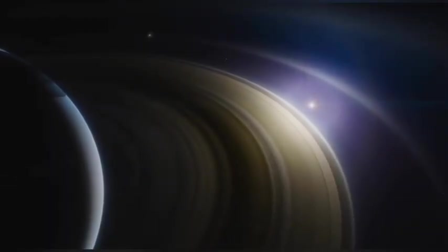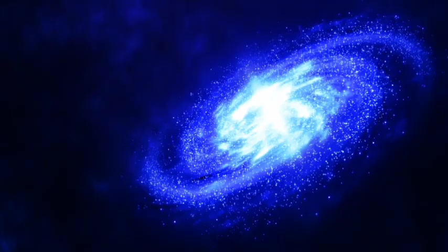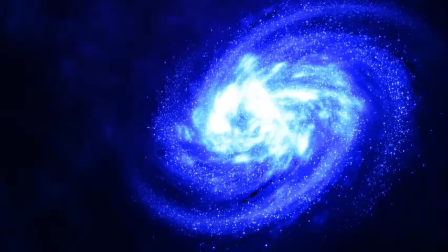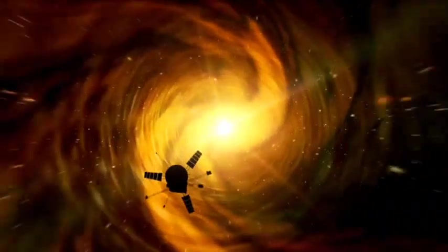Webb is tuned to infrared, a spectrum that lets it pierce through cosmic dust and catch the faint, stretched light of the earliest galaxies, light invisible to Hubble. Where Hubble's vision was like peering through a keyhole, Webb's is more like stepping back to take in a massive mural.